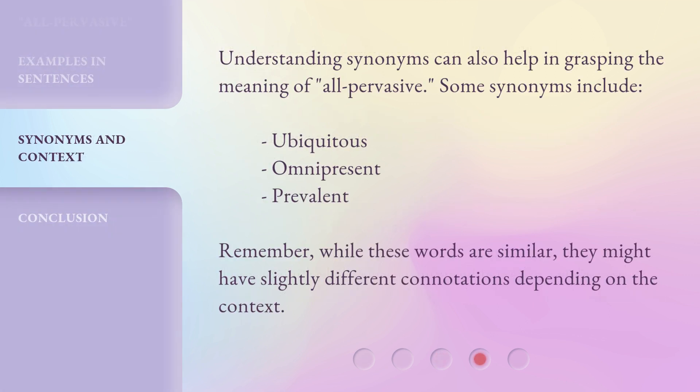Understanding synonyms can also help in grasping the meaning of all-pervasive. Some synonyms include ubiquitous, omnipresent, and prevalent. Remember, while these words are similar, they might have slightly different connotations depending on the context.